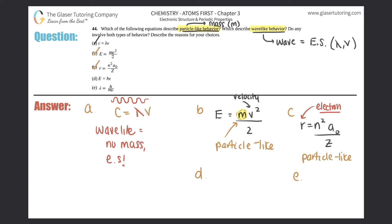D. E equals HV. So we have energy equals Planck's constant times frequency. The V here is frequency.